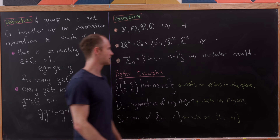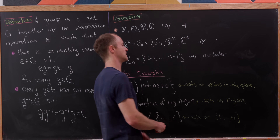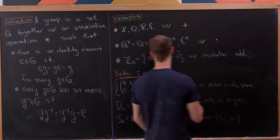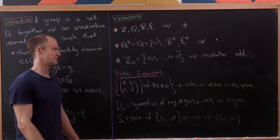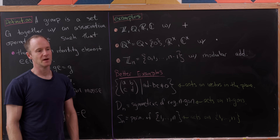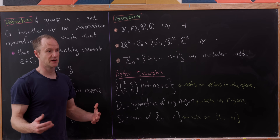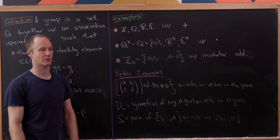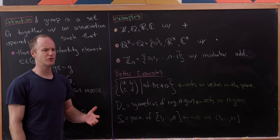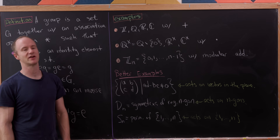Then there's Z_n, the set of equivalence classes mod n. Think of it as the set of numbers from zero to n minus one with modular addition: you add the numbers, divide by n, and keep the remainder. For instance, in Z_6, four plus five equals nine; divide by six, keep the remainder — that is three.